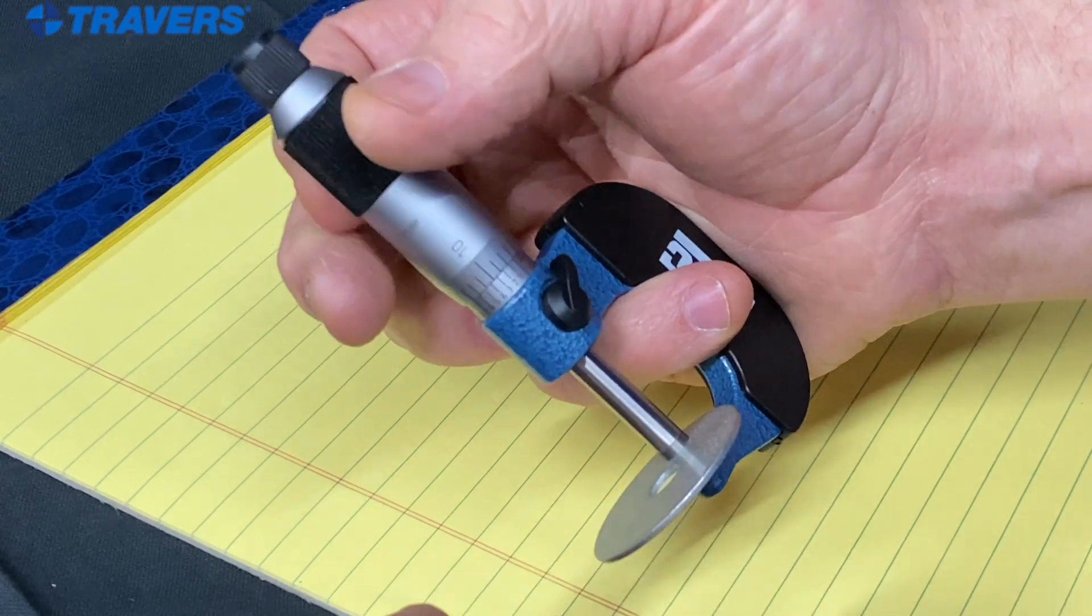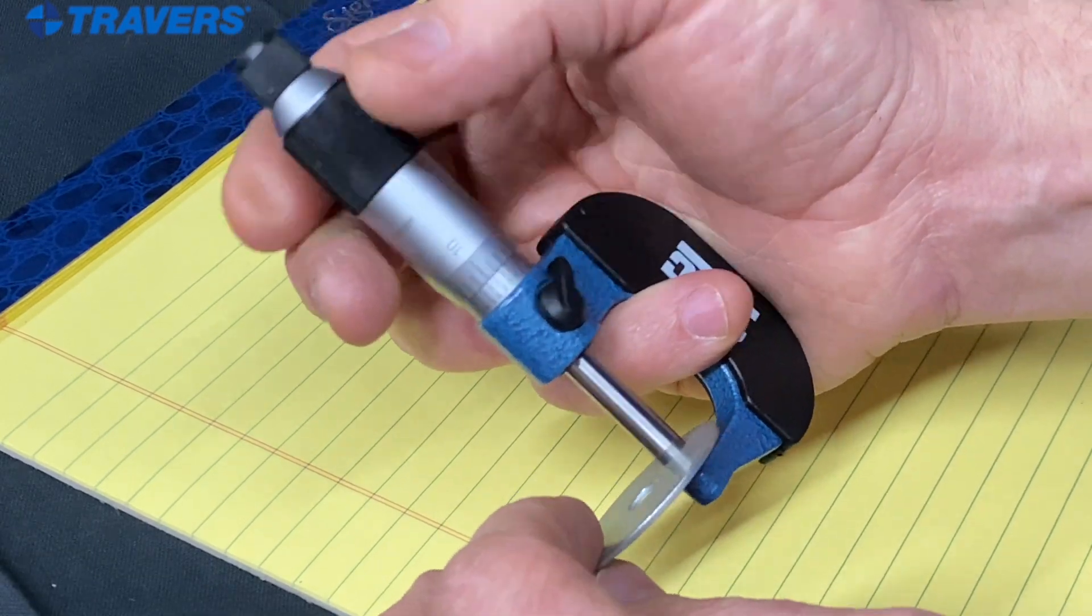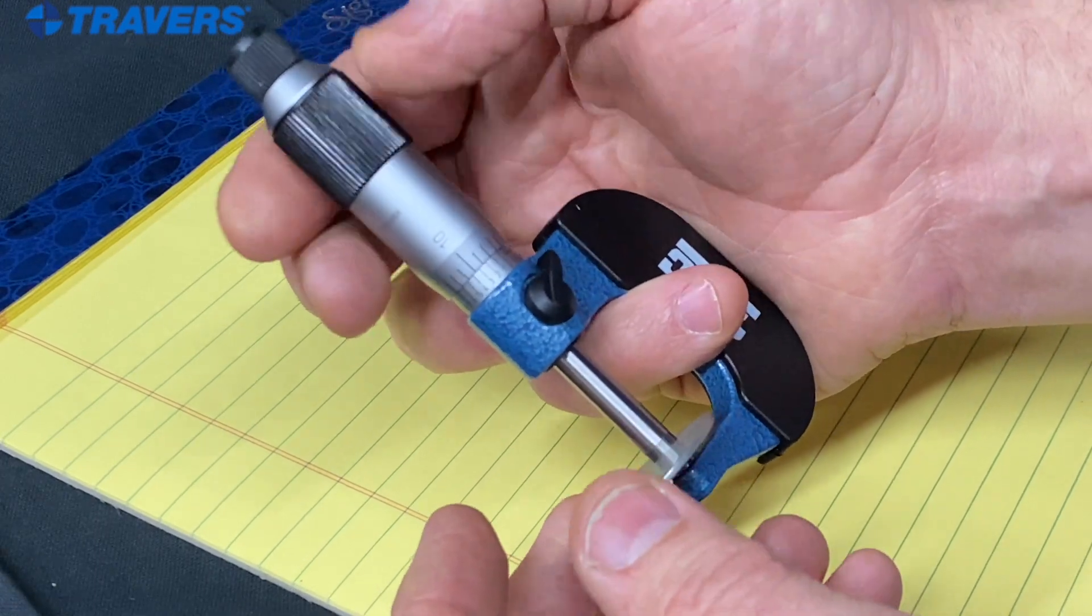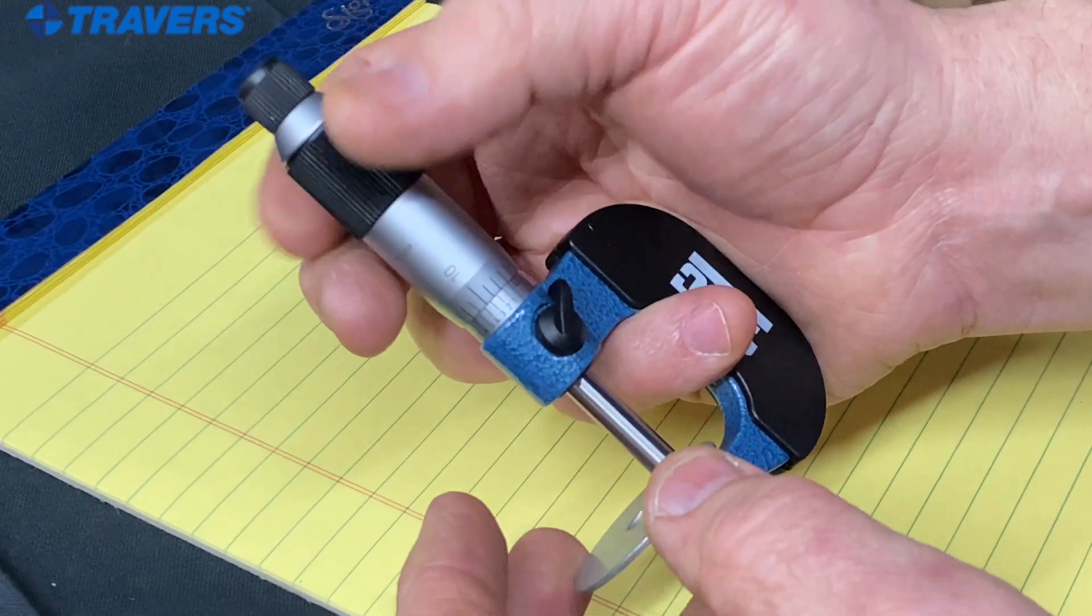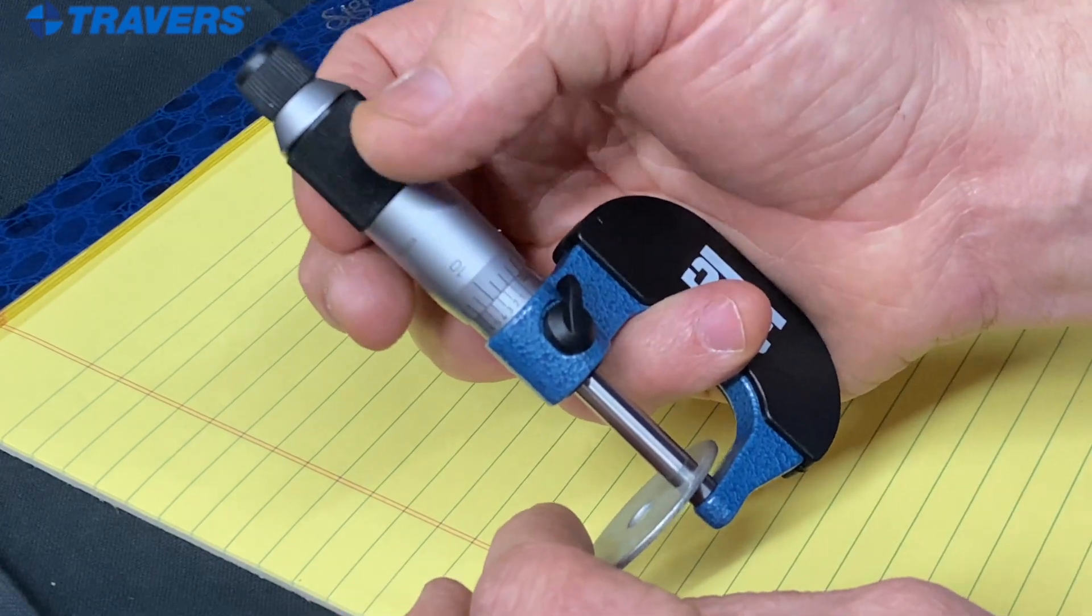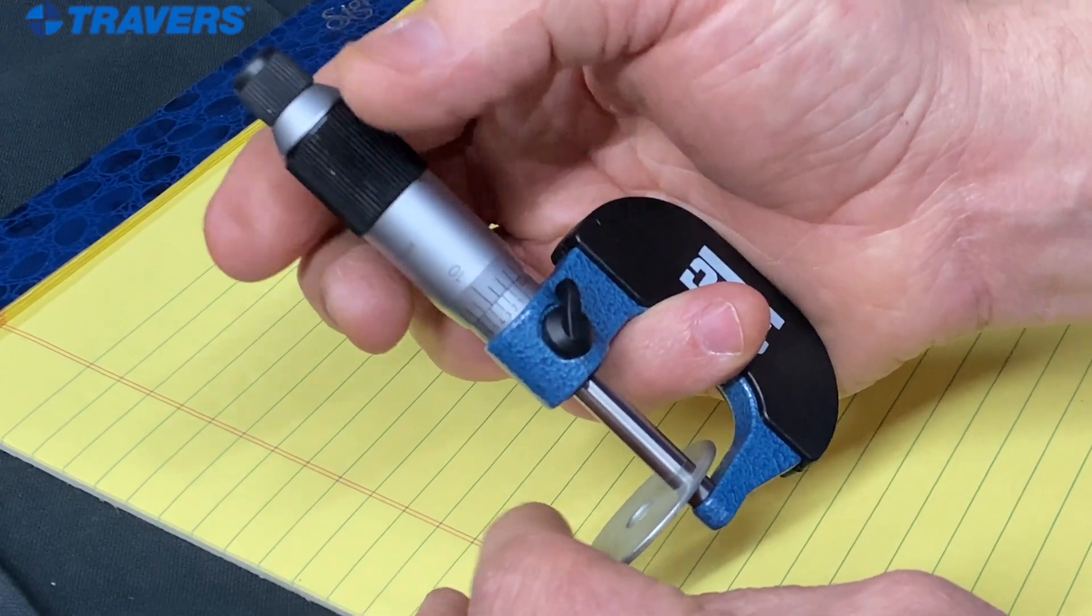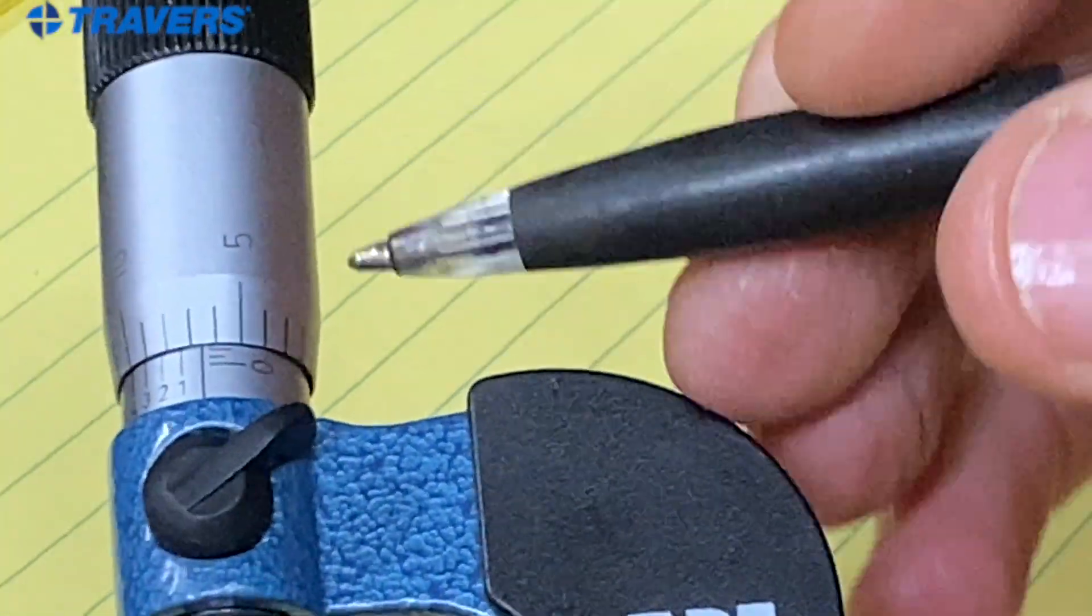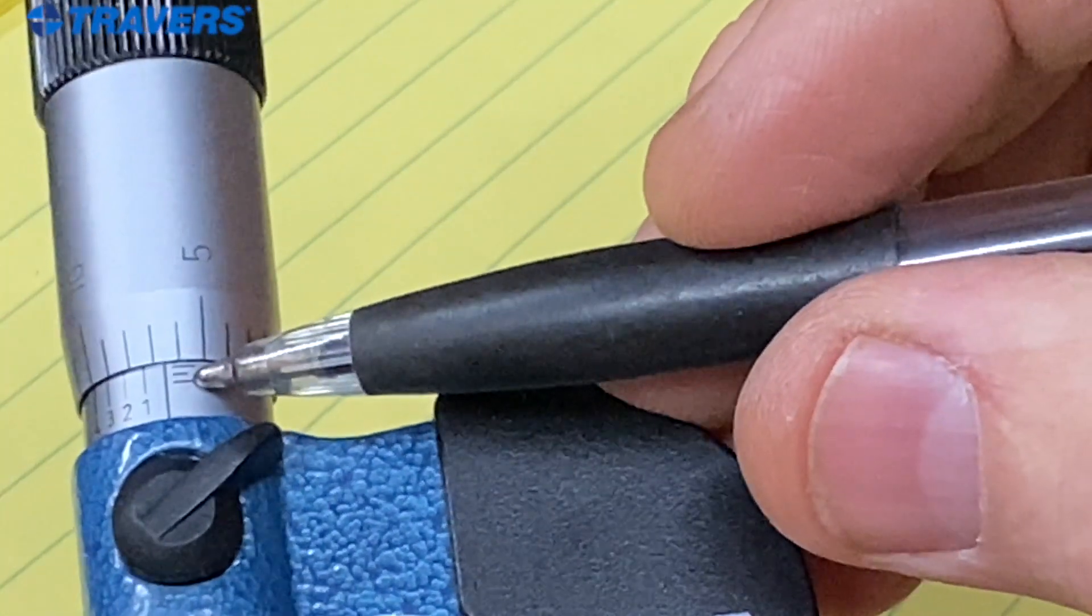So let's get that measurement. And how you measure is you turn it so it's all the way in and maybe move your workpiece around a little bit just to make sure you have the smallest measurement you can get on here. So let's see what we have.